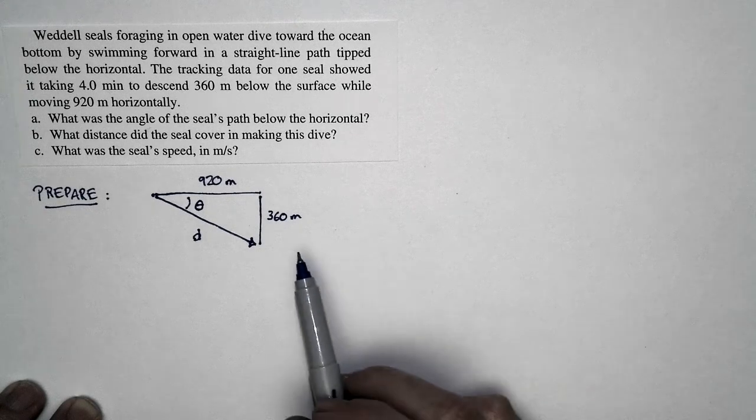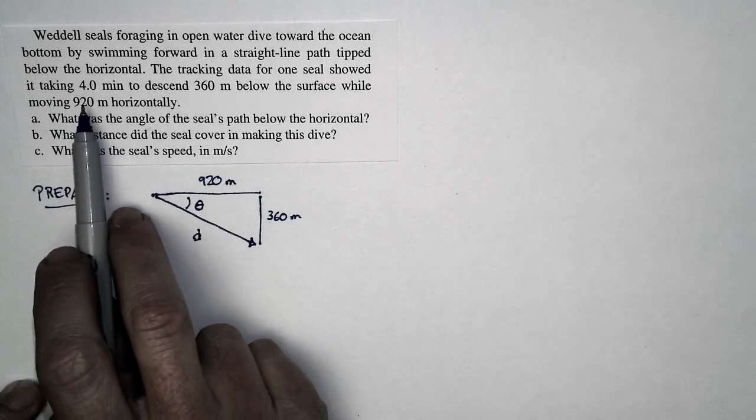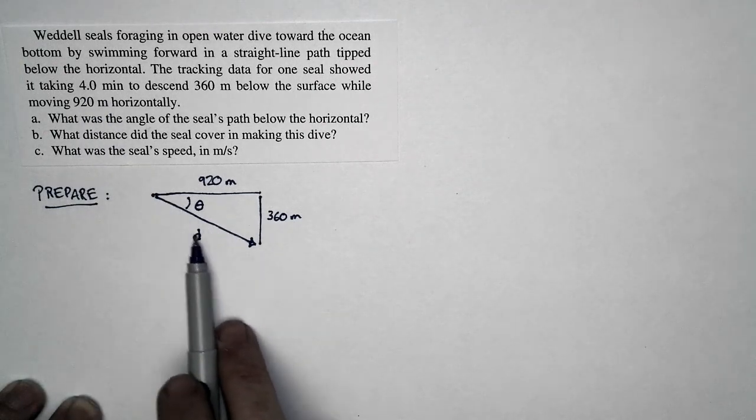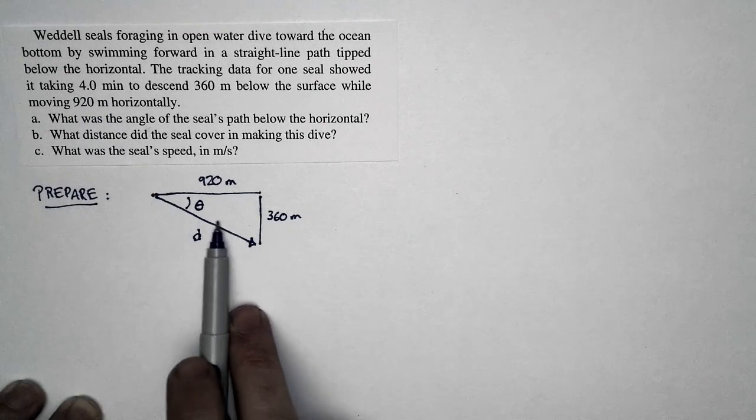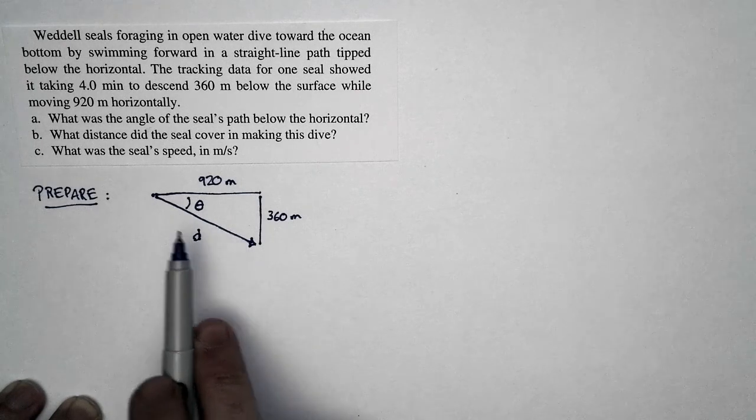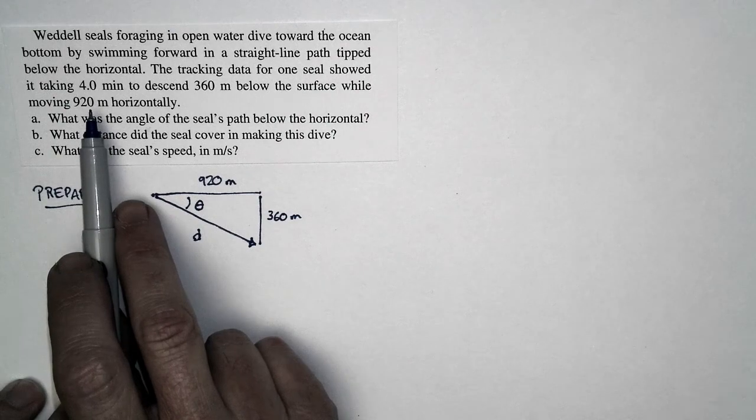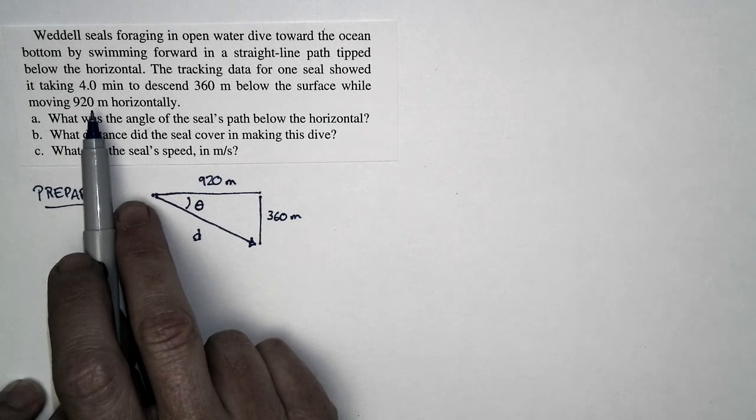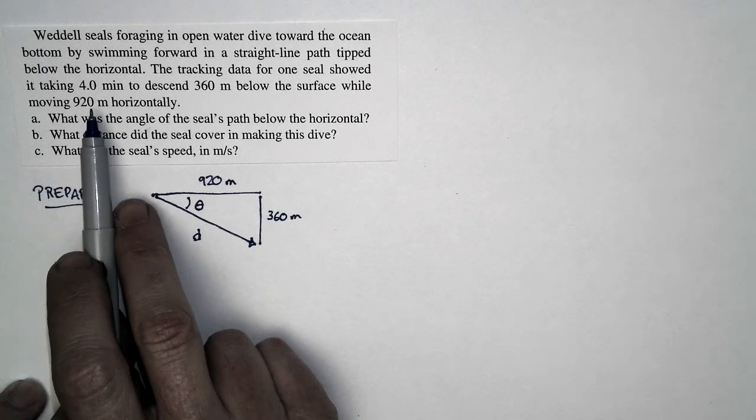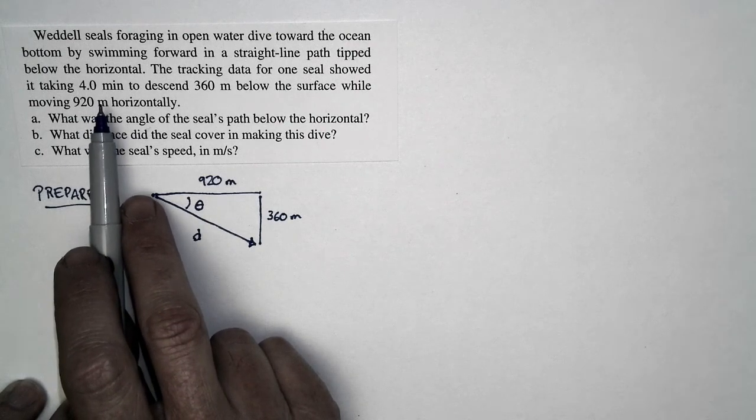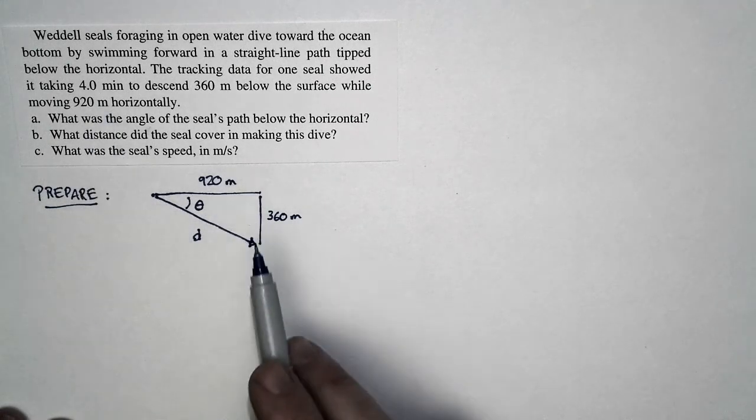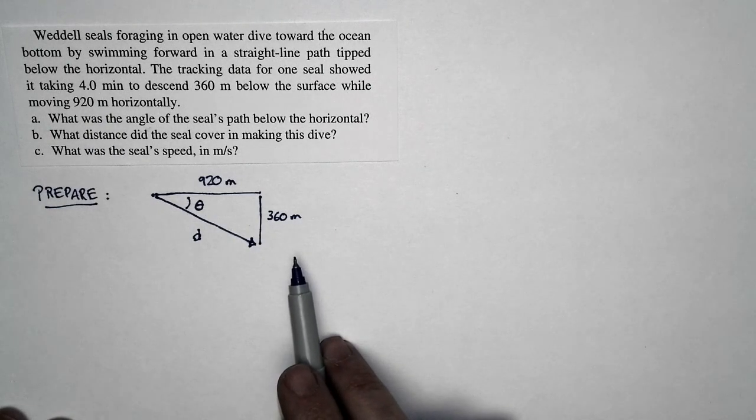Before we start, I want to do a quick assessment. It takes the seal four minutes to go this distance, and I'm guessing this distance is going to be about 1000 meters. So 1000 meters is about a kilometer. If you move a kilometer in four minutes, that means you're doing a 5k, five kilometers in about 20 minutes. That's a pretty good clip. So I'm expecting the seal to be moving at a speed that corresponds to a pretty decent running speed, and we can use that to check our work when we're done.